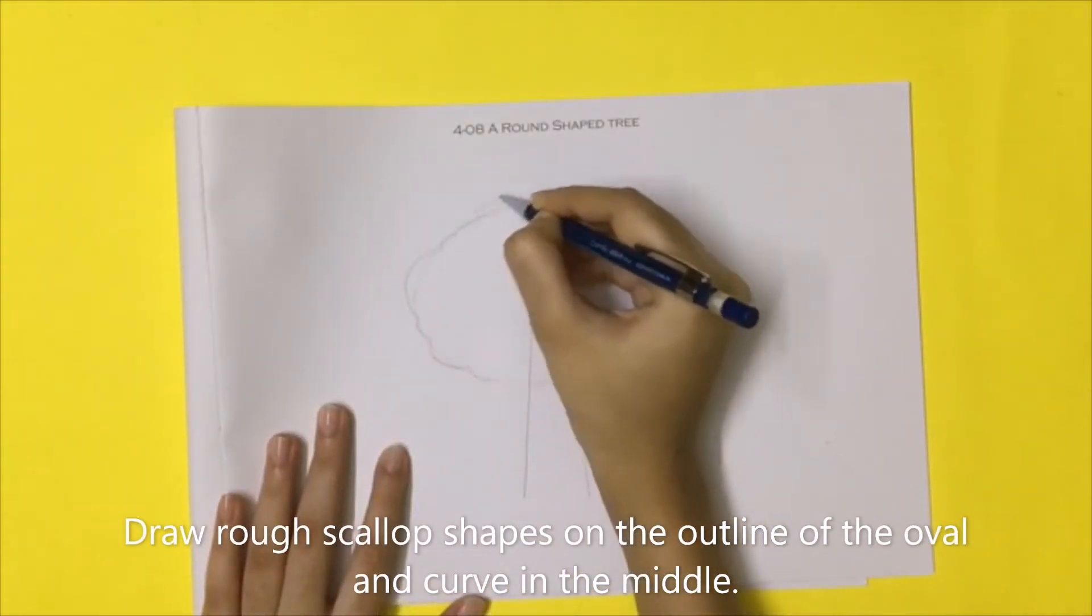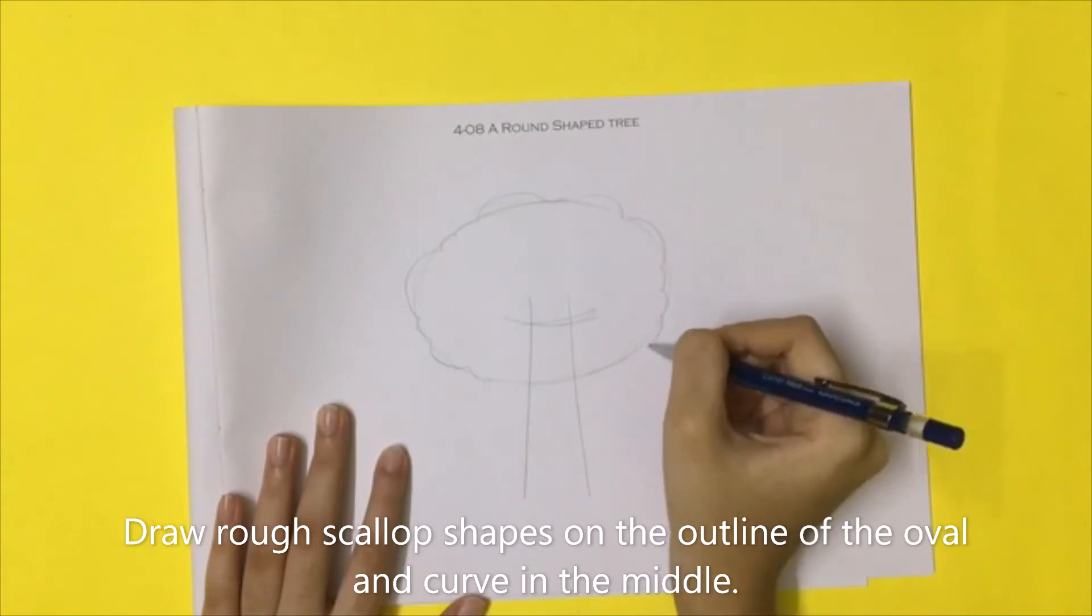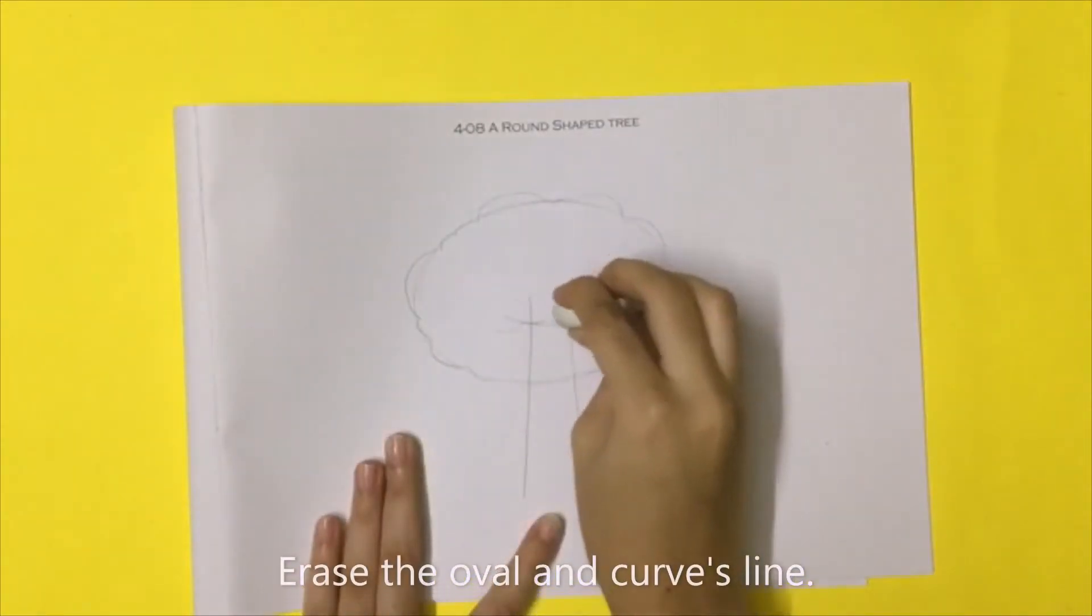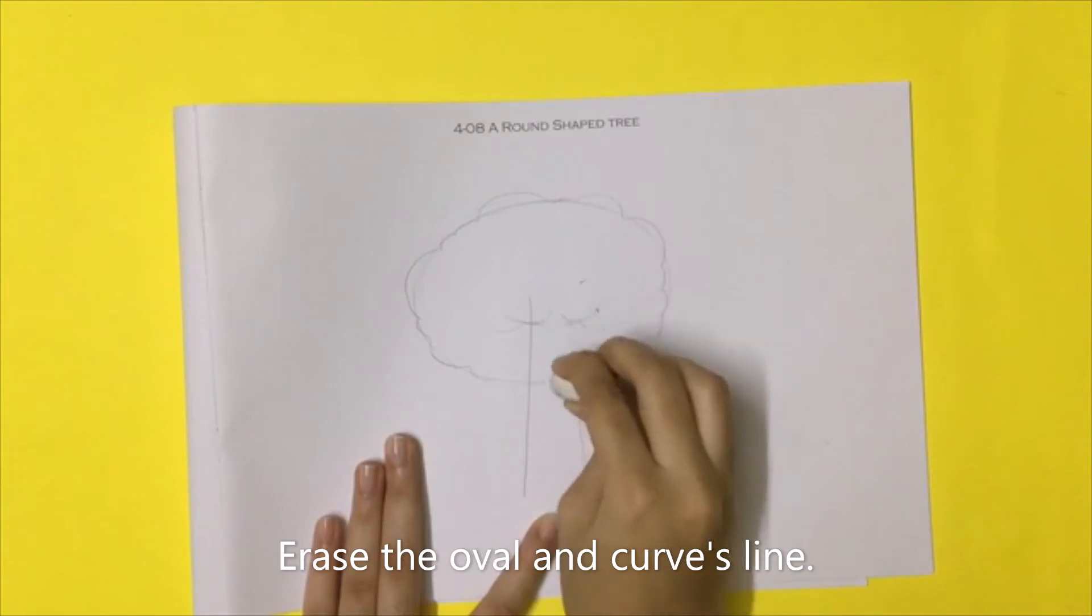Draw rough scallop shapes on the outline of the oval and the curve in the middle. Erase the oval and the curve's line.